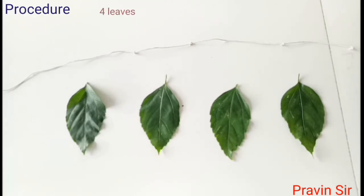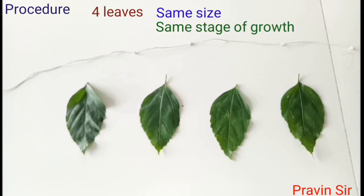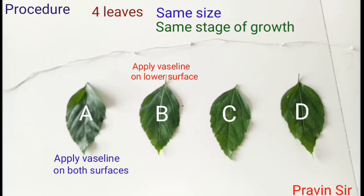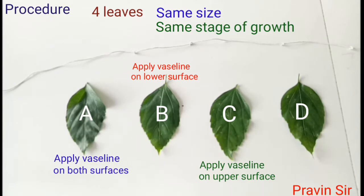Procedure: Four leaves to be taken should be of the same size and showing the same stage of growth. Label the leaves as leaf A, B, C, and D. On leaf A, apply vaseline on both surfaces. On leaf B, apply vaseline on the lower surface. On leaf C, apply vaseline on the upper surface. On leaf D, no vaseline is to be applied.